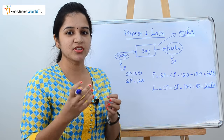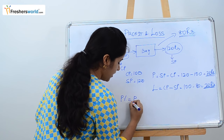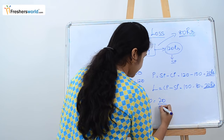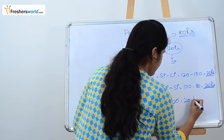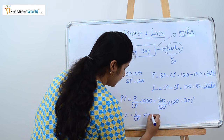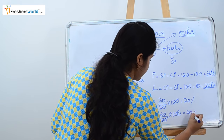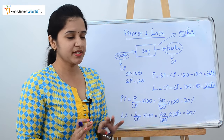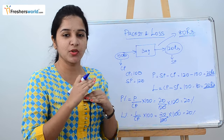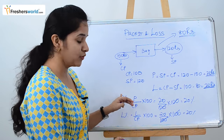There are also questions on loss percentage and profit percentage. Profit percentage is profit divided by CP multiplied by 100, which gives 20 by 100 into 100 — that's 20 percent. Loss percent is loss by CP into 100, which is 20 by 100 into 100 — also 20 percent. We always use cost price in the denominator because it remains constant, regardless of whether you sell at a profit or loss.